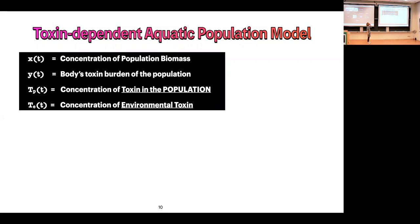Our model has four variables. X is the concentration of population biomass. Y is the body's toxin burden of the population—also called body burden—the amount of toxin in the body. T_p is the concentration of toxin in the population. T_e is the concentration of environmental toxin, which we eventually set as a constant in our model.